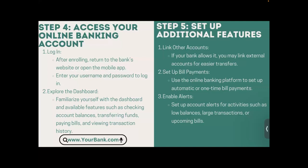Step five — set up additional features: if your bank allows it, link external accounts for easier transfers. Use the online banking platform to set up automatic or one-time bill payments. Enable account alerts for activities such as low balances, large transactions, or upcoming bills.